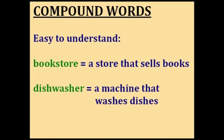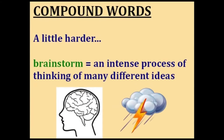Sometimes compound words are easy to understand. A bookstore is a store that sells books — makes sense. And a dishwasher is a machine that washes dishes; maybe you have one in your kitchen. But others might not be so obvious. For example, brainstorm: to brainstorm is an intense process where you think of many, many different ideas in the hopes of getting a good idea.